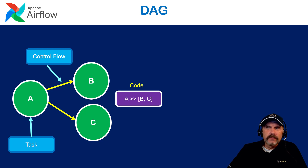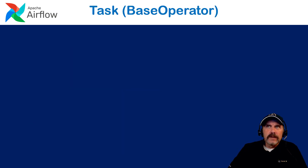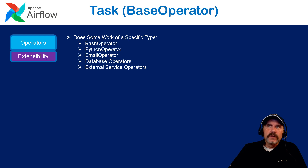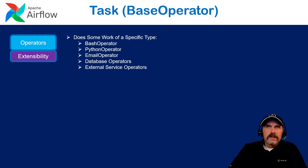A task consists of something called operators, and at the very root is called the base operator. Operators really form the extensibility of the Airflow engine — it's a very plug-and-play kind of thing. You can write your own operators, and there are tons of them out there that will connect to and run just about anything you can think of. You have operators to run bash scripts, Python scripts, to do email, connect to databases, or connect to different external services. It's a good architectural concept because it abstracts away the complexity of connecting to different resources.